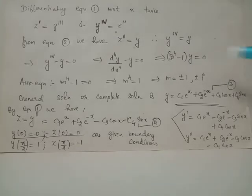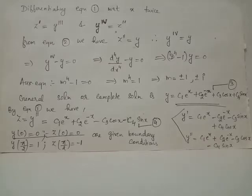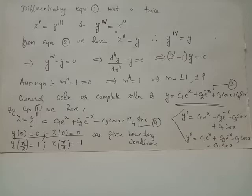From this differential equation, the auxiliary equation is obtained as m raised to 4 minus 1 equals 0. Solving this, we get m equals plus minus 1 or plus minus i, because i raised to 4 equals 1, and positive 1 raised to 4 and negative 1 raised to 4 also give 1. Therefore, the four roots of m raised to 4 minus 1 equals 0 are plus minus 1 and plus minus iota.